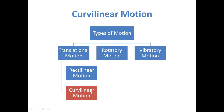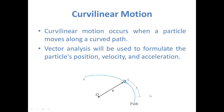Curvilinear motion occurs when a particle moves along a curved path. For this, vector analysis will be used to formulate the particle's position, velocity, and acceleration.